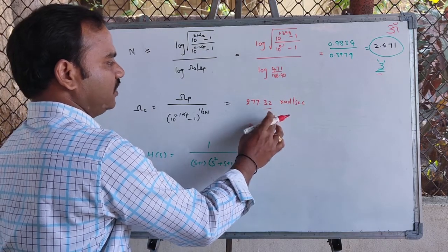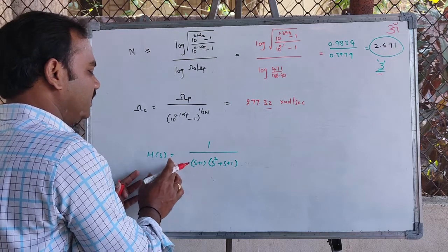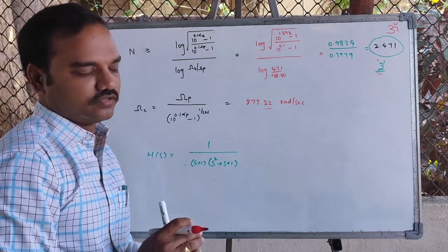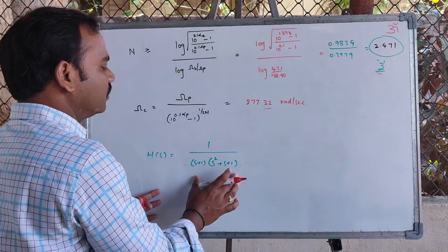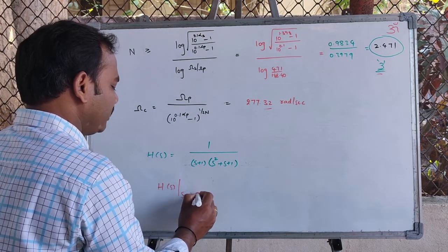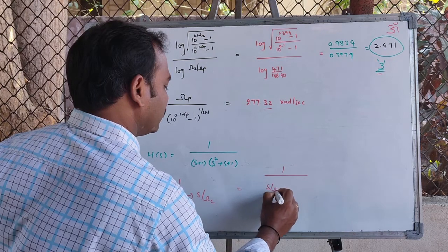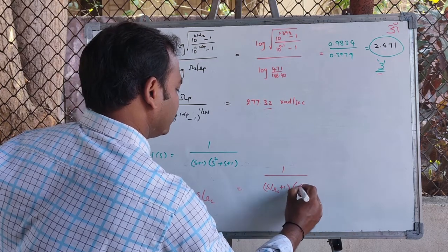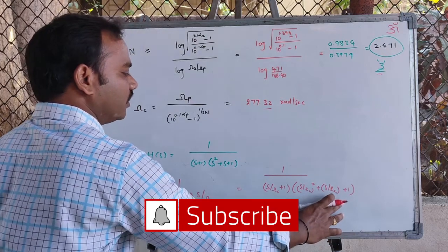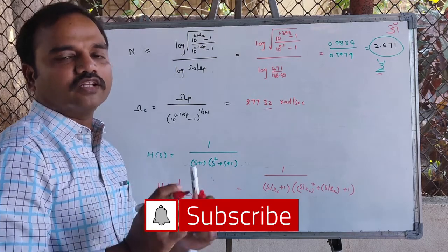Now we will find the transfer function H(s) of the filter. The normalized transfer function is obtained for a cutoff frequency of 1. To get the actual transfer function for cutoff frequency 277.32 rad/s, we replace s with s/Ω_c, giving H(s) = 1 / [(s/Ω_c + 1)((s/Ω_c)² + (s/Ω_c) + 1)]. This is the transfer function of the low pass Butterworth filter for the given specifications.